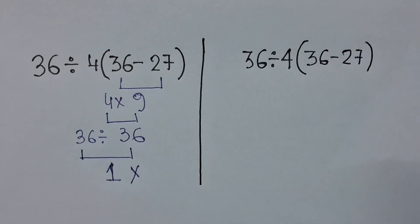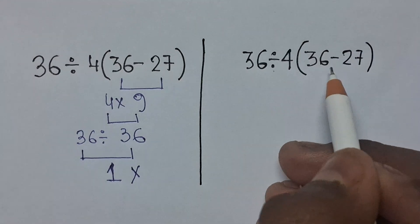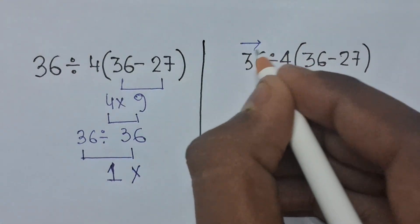According to the order of operations, which is called BODMAS, the division and multiplication have equal priority, but we have to solve them from left to right.